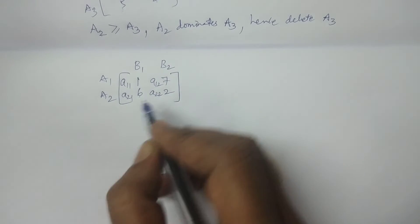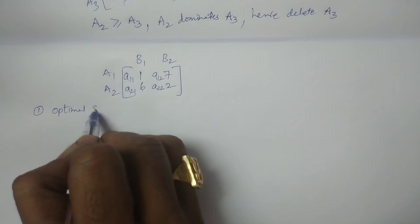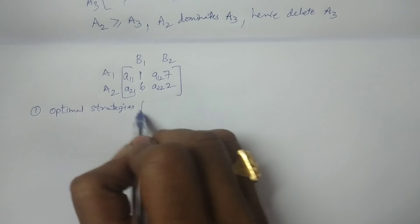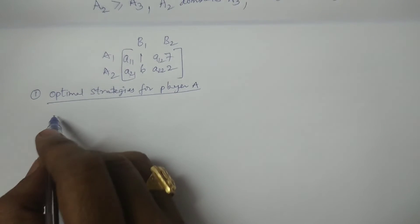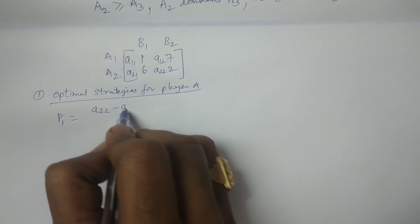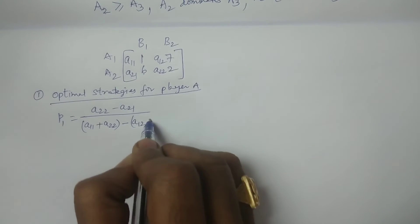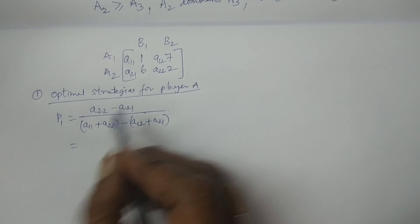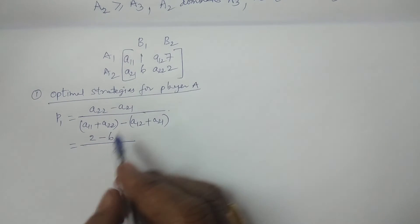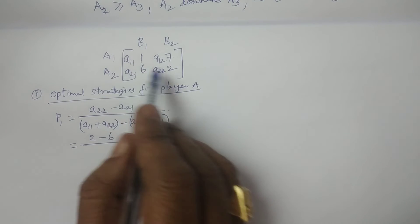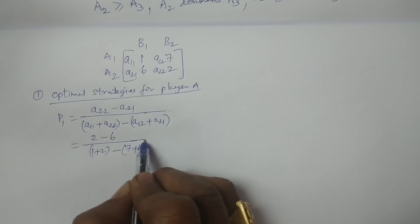We now calculate using the 2 by 2 matrix with A11=1, A12=7, A21=6, A22=2. The formula for P1 is: P1 = (A22 − A21) / (A11 + A22 − A12 − A21). Substituting: P1 = (2 − 6) / (1 + 2 − 7 − 6) = −4 / −10.